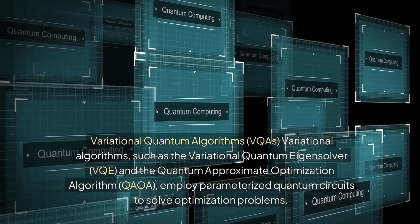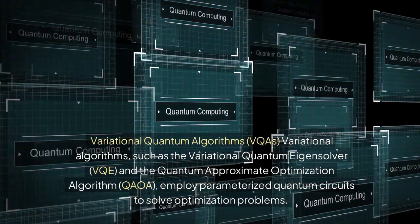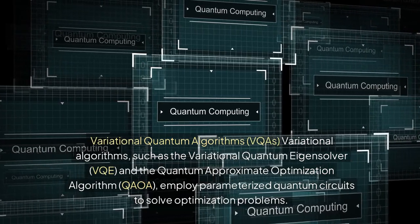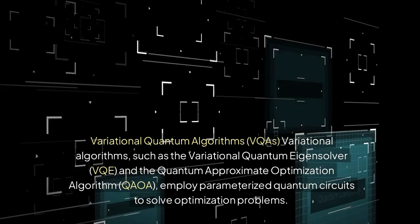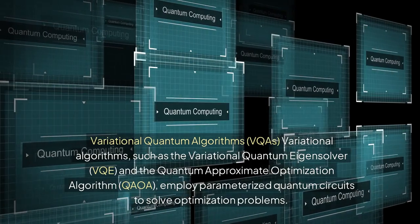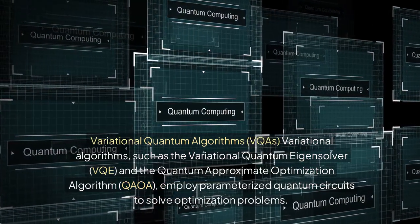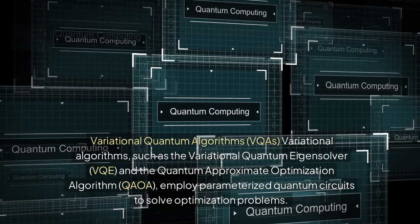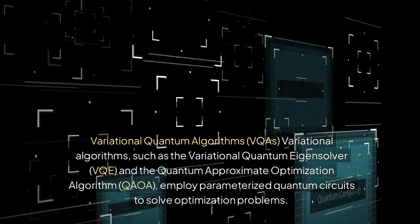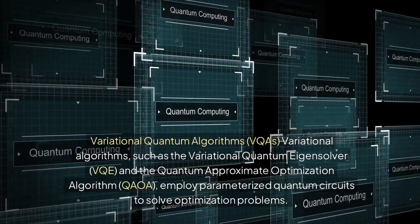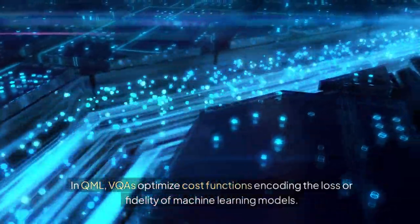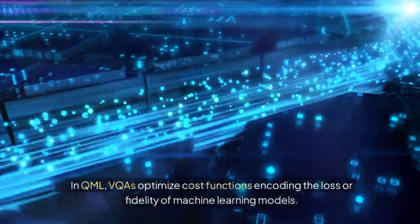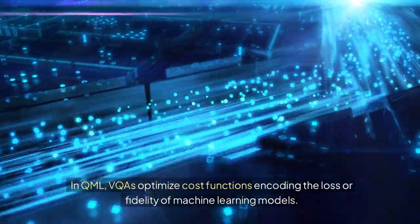Variational quantum algorithms (VQAs), such as the Variational Quantum Eigensolver (VQE) and the Quantum Approximate Optimization Algorithm (QAOA), employ parameterized quantum circuits to solve optimization problems. In QML, VQAs optimize cost functions encoding the loss or fidelity of machine learning models.